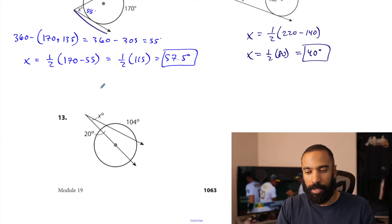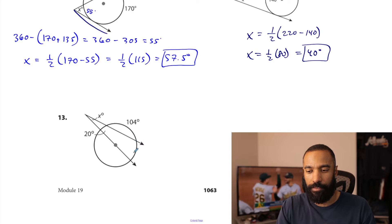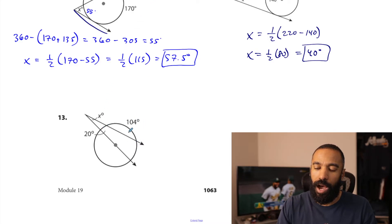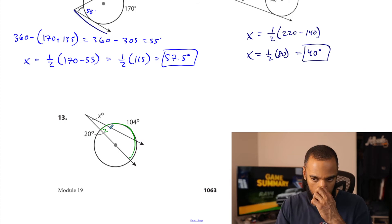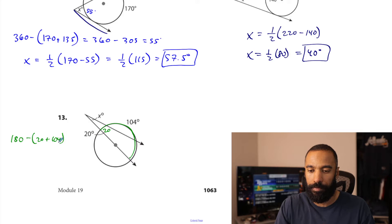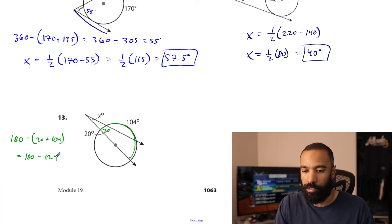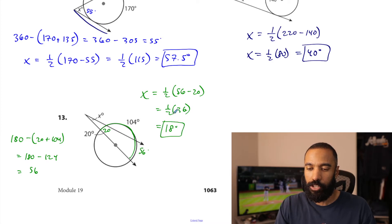And last one — we have a 20 degree arc right here and we need x right here. We're going to have to figure out what this arc is to do half of this minus that to get the x degree mark. This is a semicircle right here, and that includes the 20. So 20 plus 104 plus this unknown is going to be 180. So 180 minus the sum of 20 and 104 is going to be that arc: 180 minus 124, which is 56. So x is half the difference of 56 and 20 — half of 36, and that's 18 degrees.